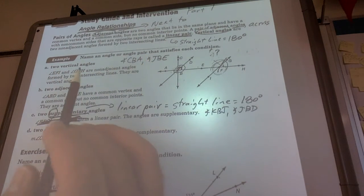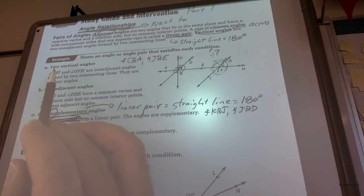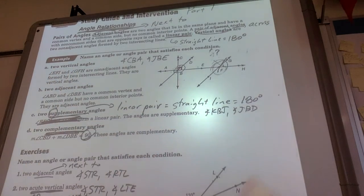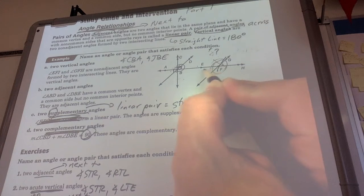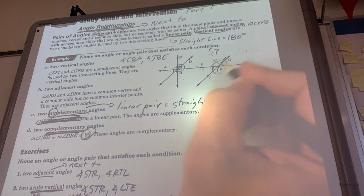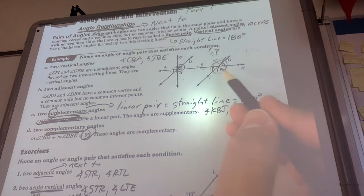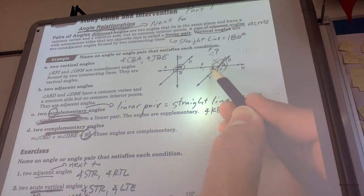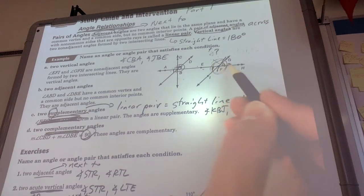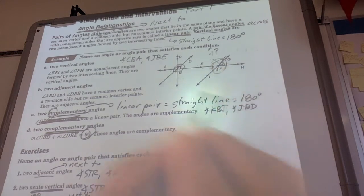Down here, it says name an angle or angle pair that satisfies each condition. So here are two vertical angles. The book says angle EFI, so this angle right there, and angle GFH, this angle. So non-adjacent and they are vertical. Those are across from each other.